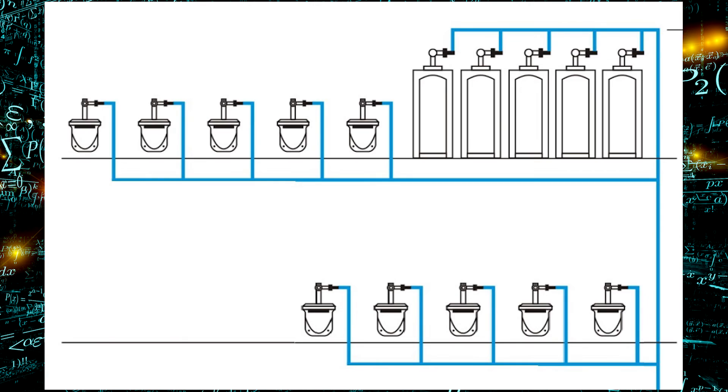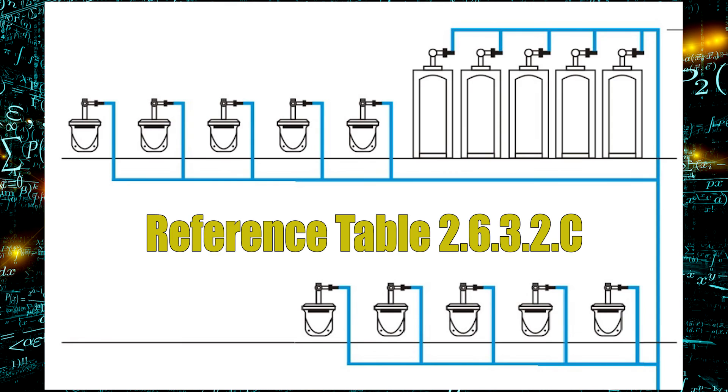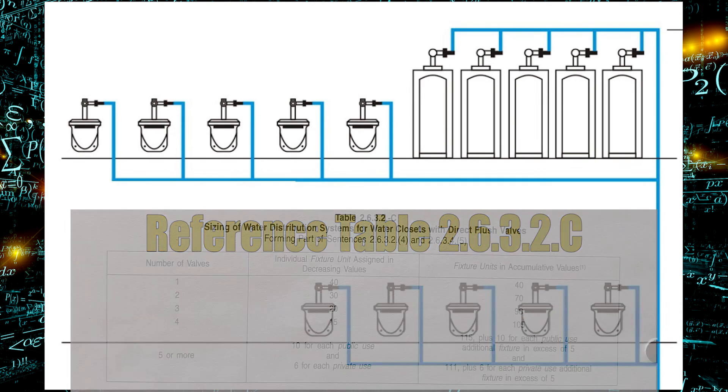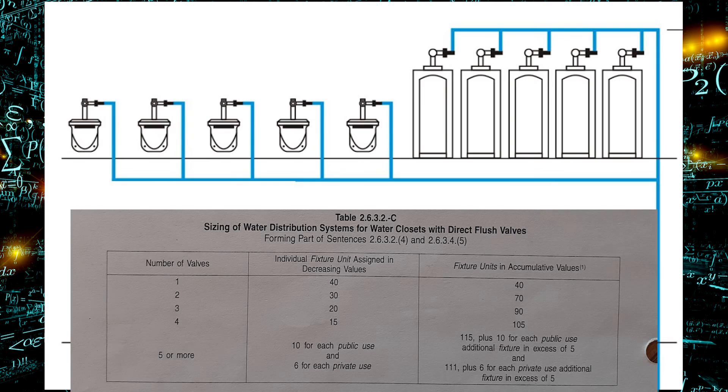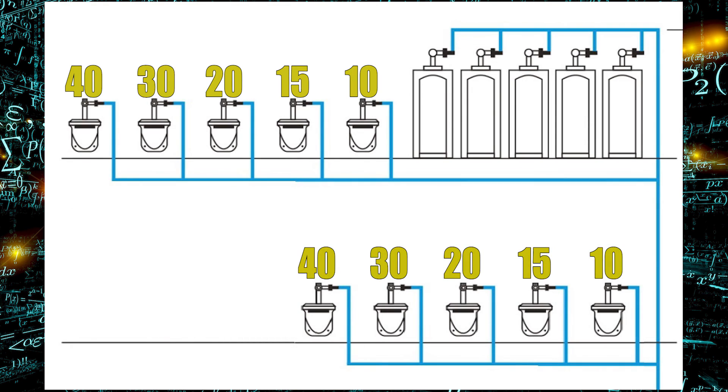So now we have a direct flush valve set up here. What you see on the top floor is five direct flush valve water closets, right beside five direct flush valve urinals, and the lower floor down is five more direct flush valve water closets. Now we're going to label out the fixture units like we're told to in table 2632C for the water closets. On the far left-hand side here, we have 40 fixture units going to this water closet. The next one down is 30, the next one down is 20, the next one down is 15, and the next one down is 10. Now the five water closets along the bottom floor are going to look exactly the same as the five upstairs.